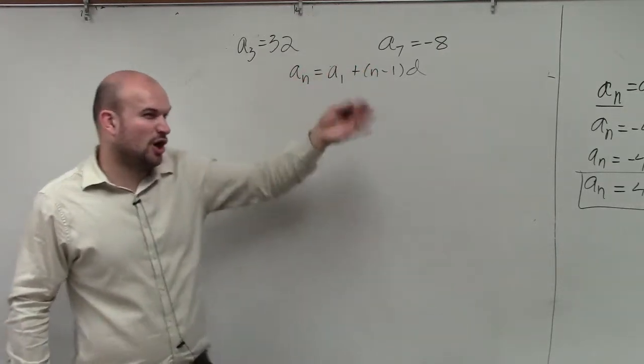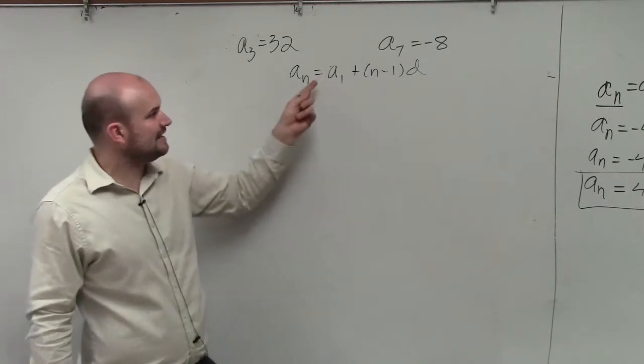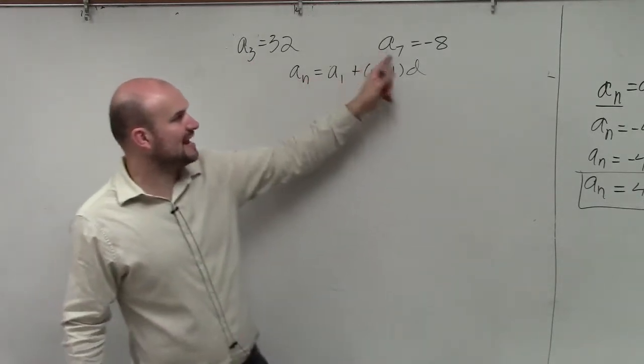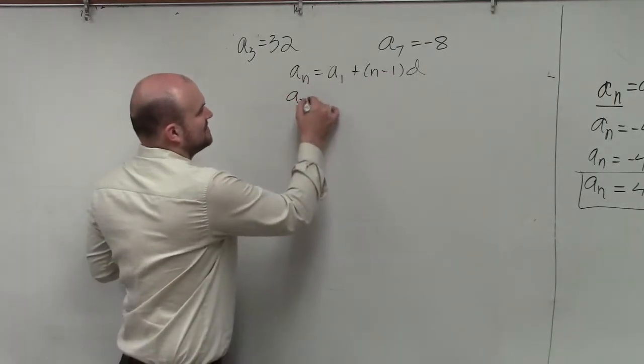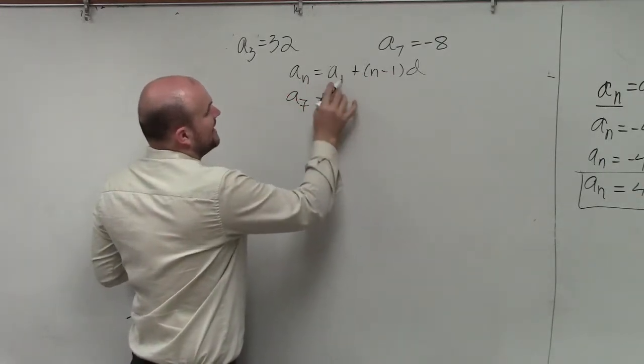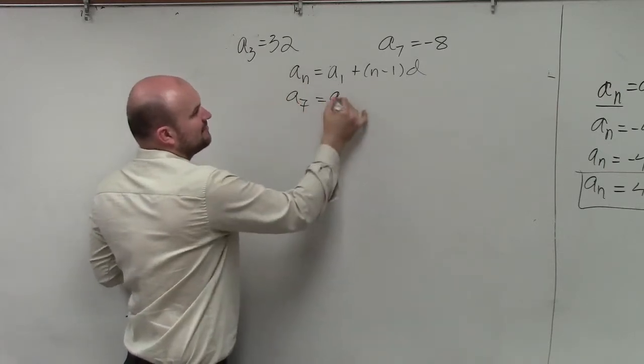Well, in this case, remember, we can alter the explicit formula. Instead of using a sub n and n, we could use a sub 7 and plug 7 in for n. So I'll do a sub 7 equals a sub 1. Instead of using a sub 1, I'm going to use a sub 3.